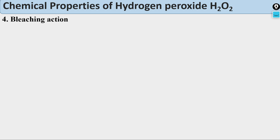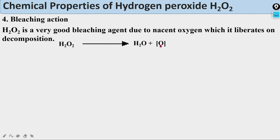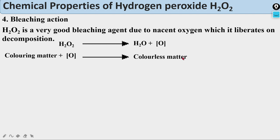Bleaching action of hydrogen peroxide is a very important action. H₂O₂ is a very good bleaching agent due to nascent oxygen, which it liberates on decomposition: H₂O₂ → H₂O + [O]. This nascent oxygen reacts with coloring matter and bleaches it to give colorless matter. This is the bleaching action of hydrogen peroxide.